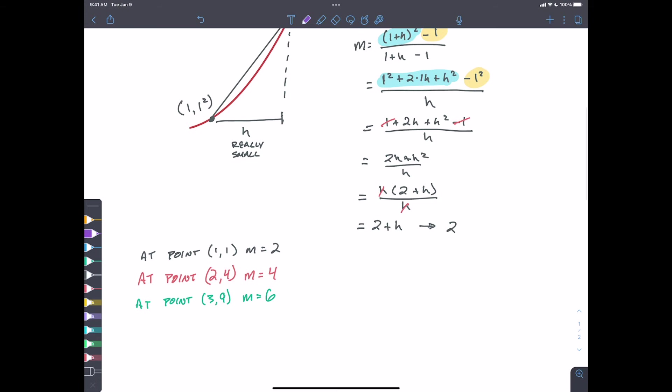So I would guess it seems as though the slope at any point, at any point on y equals x squared, is going to be 2x. So there we go. So two times whatever our x value is is going to be our slope.